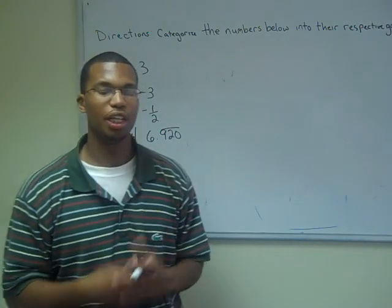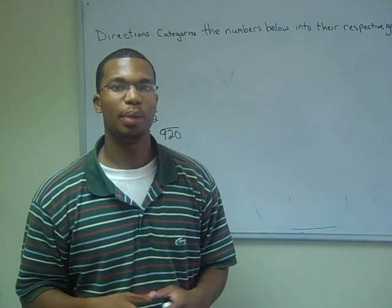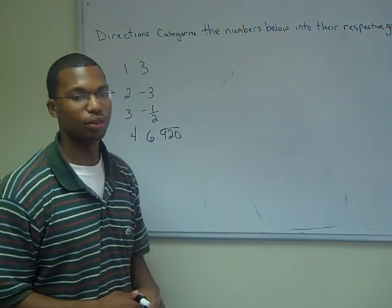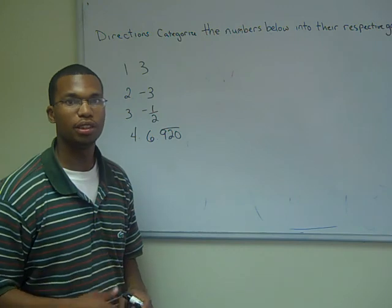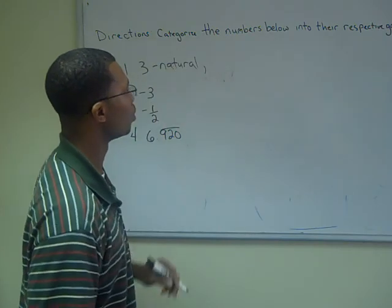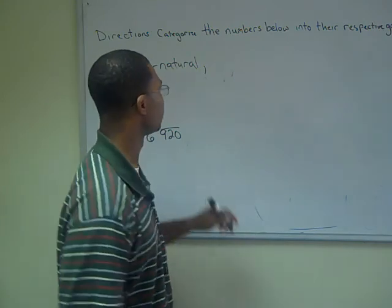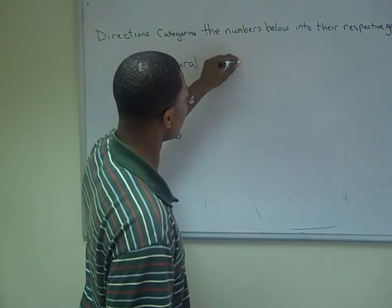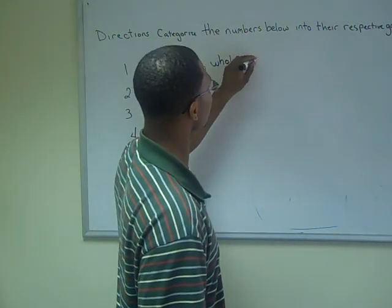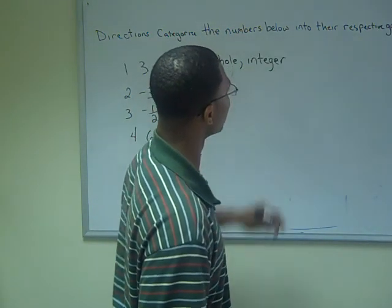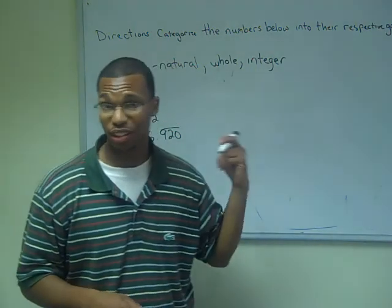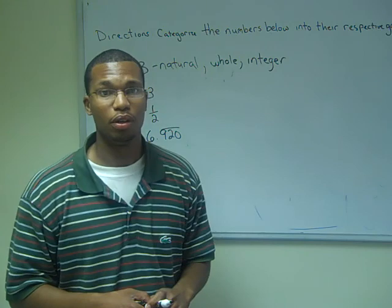Now I'm going to give you a few numbers and I want you to guess the type of groups that they would go into. The first number is 3. What group can that go into? Is 3 a natural number? Yes. Is 3 a whole number? Yes. Is 3 an integer? Yes. Is 3 a rational number? No, because it's not a terminating decimal. Is it an irrational number? No.